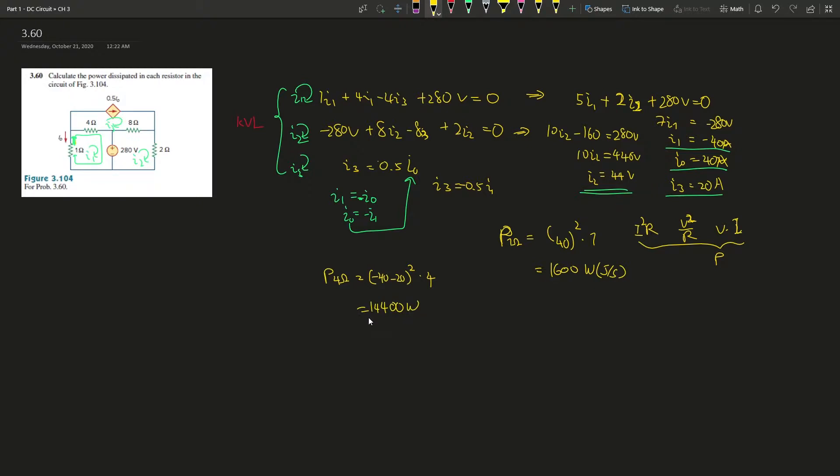Power at 8 ohms resistor is I2 which is 44 minus I3 which is 20 to the power of 2 times 8. That is going to be 24 squared times 8, which is 4608 watts.